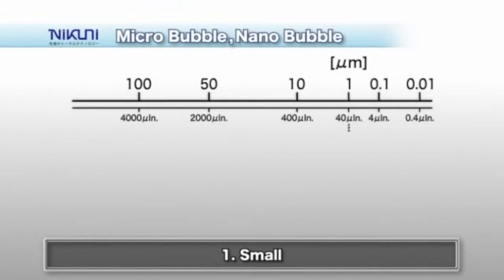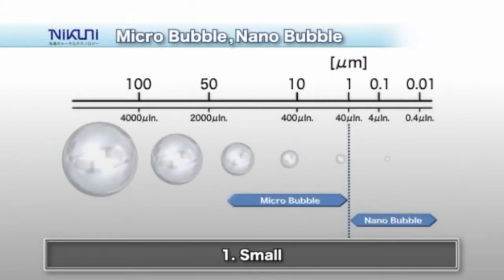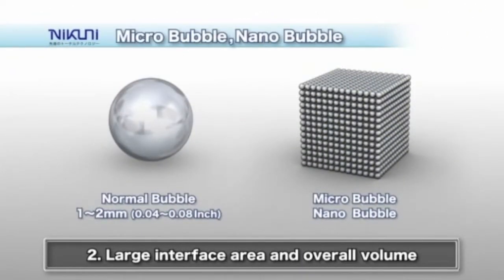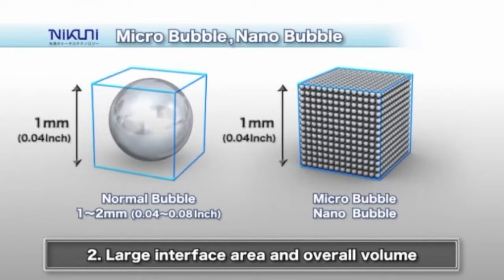A clear advantage of Nikuni's micro nano bubble technology is a very small bubble diameter. Air bubbles produced by our system have an average diameter of 5 microns. Compared to bubbles produced by conventional systems as big as several millimeters in diameter, there is an enormous number of micro nano bubbles in each cubic millimeter, creating a greater interface area and overall volume of bubbles.